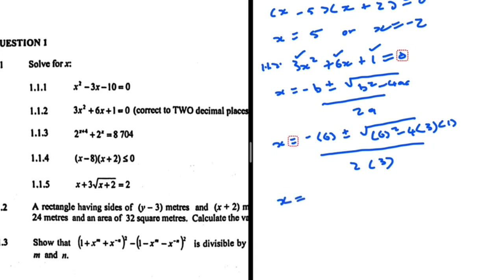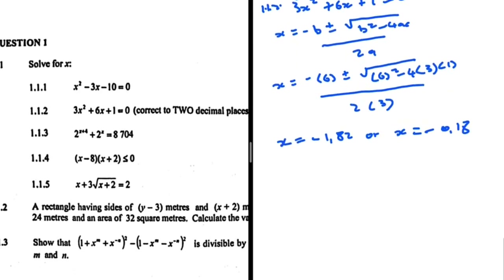So x equals minus 1.82. I put that into my calculator and I get x equals minus 1.82 or x equals minus 0.18. There we go — 1.1.2 done.